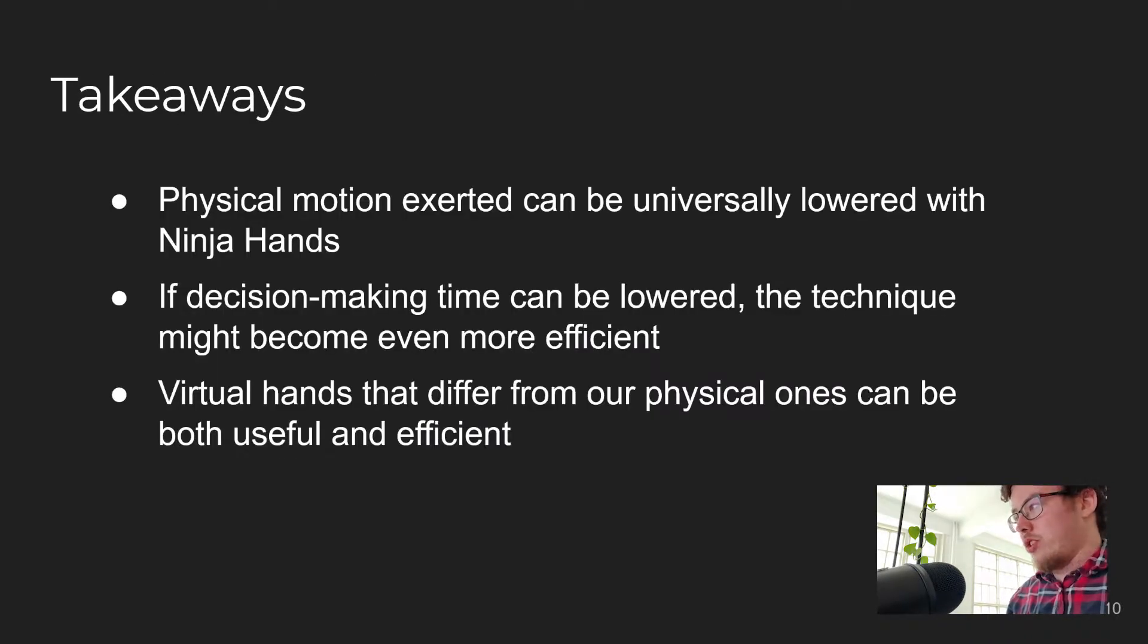We introduce the concept of having many virtual hands mapped to a physical hand, and show that it works in certain conditions and has some benefits for interaction. The universal reduction in physical motion exerted could be useful in situations where it might be more important to reduce the physical motion exerted than to be as fast as possible. For example, this might be useful for users who need to spend many hours in virtual reality, or even for physically impaired users.